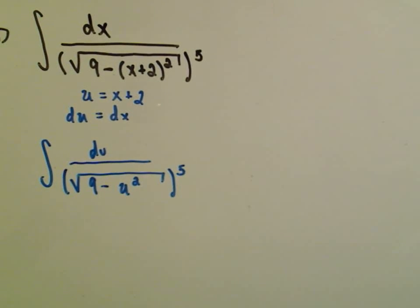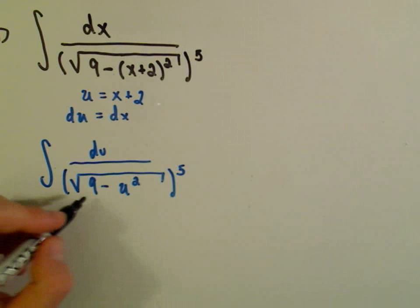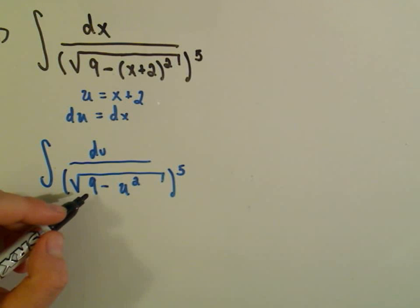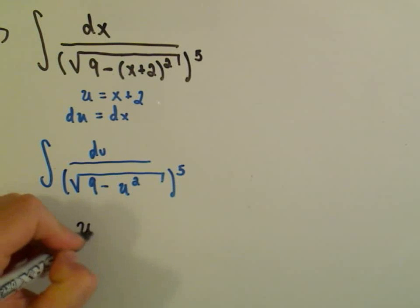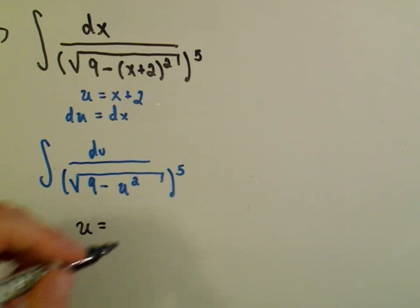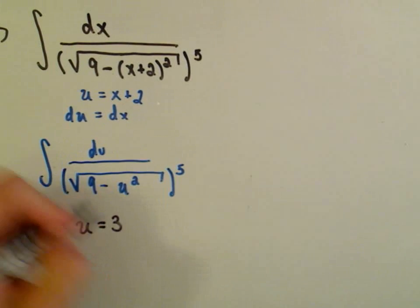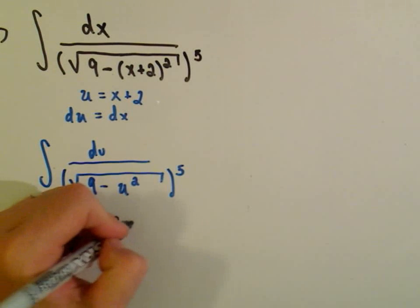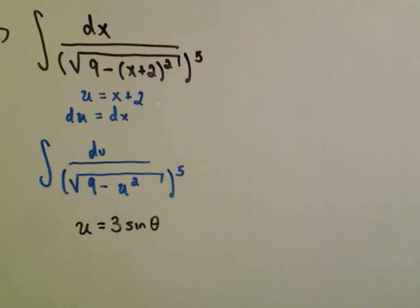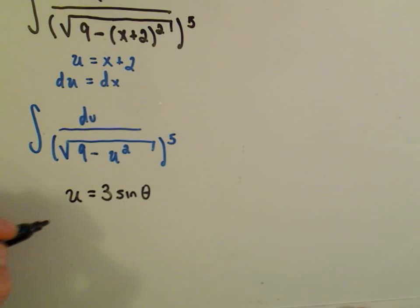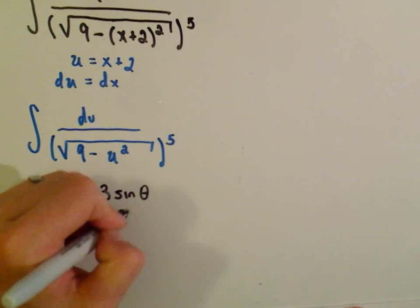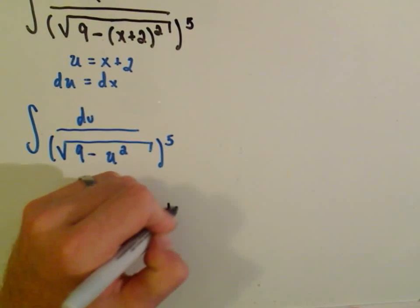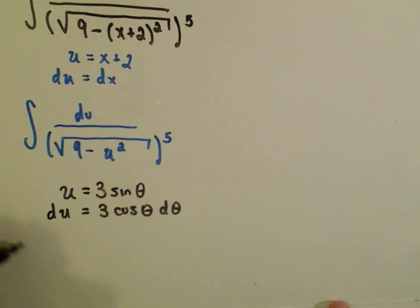So remember the substitution that you use in this case. If it's a number squared minus a variable squared, we'll use the substitution, the variable, which in this case is u, equals 3. You take the square root of the number, sine theta. Alright, so if we calculate du from that, we'll get 3 cosine theta d theta.